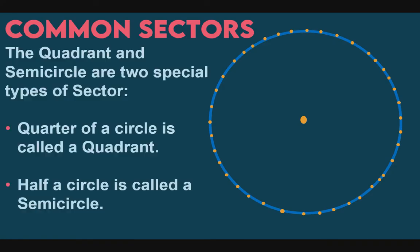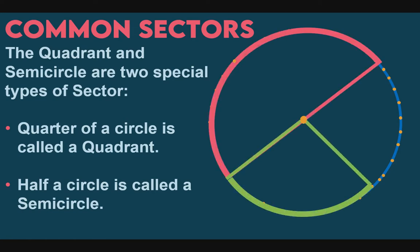Next, common sectors. There are two types. First, a quarter of a circle is called a quadrant. Second, half of a circle is called a semicircle. So when it is one-half, it is a semicircle, and when it is one-fourth — or half of a half — it is a quadrant, similar to the four quadrants in a Cartesian plane.